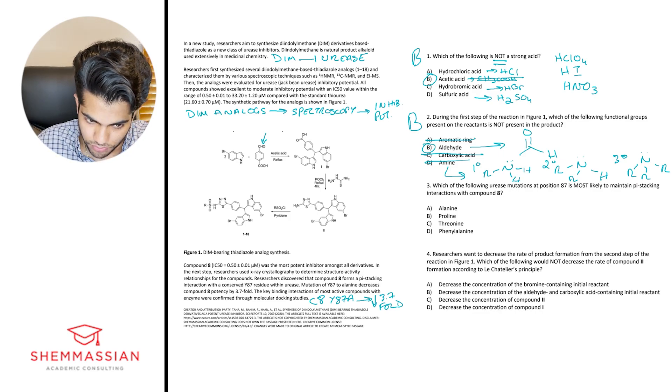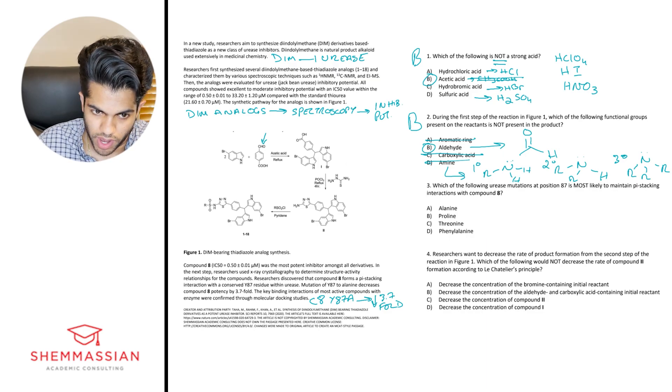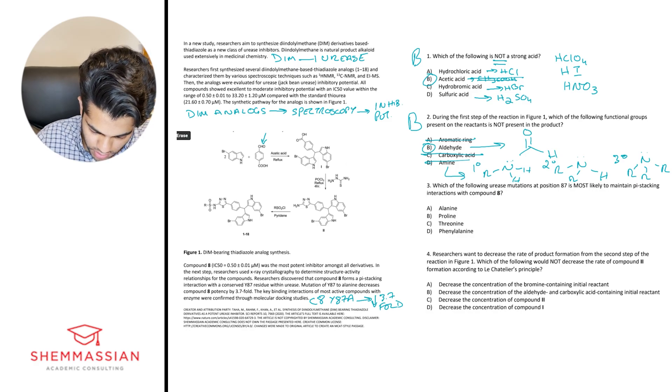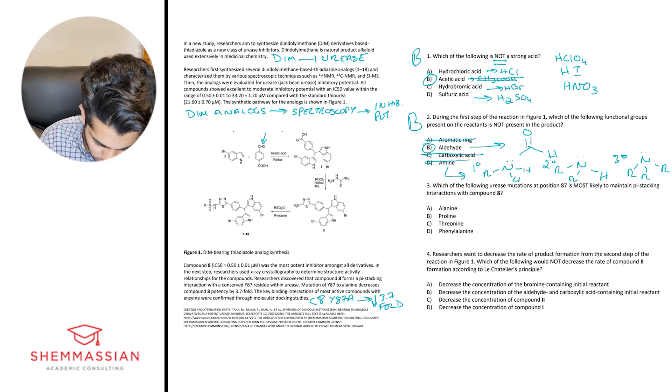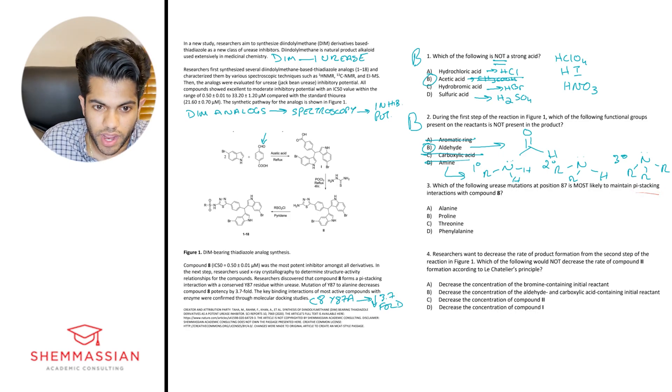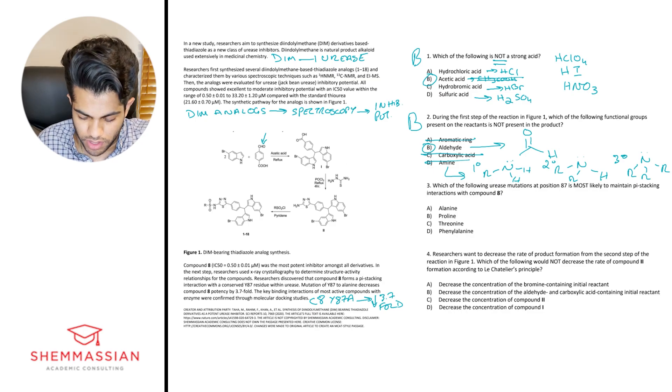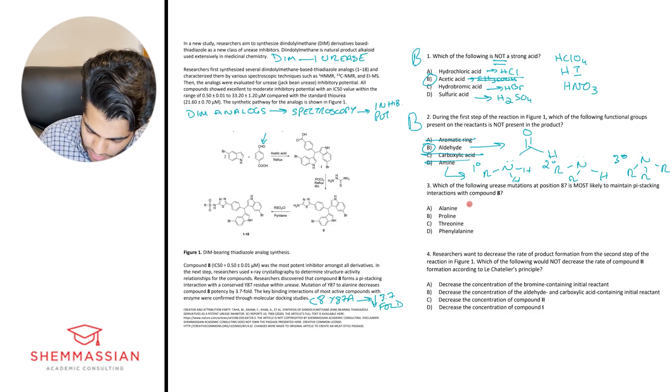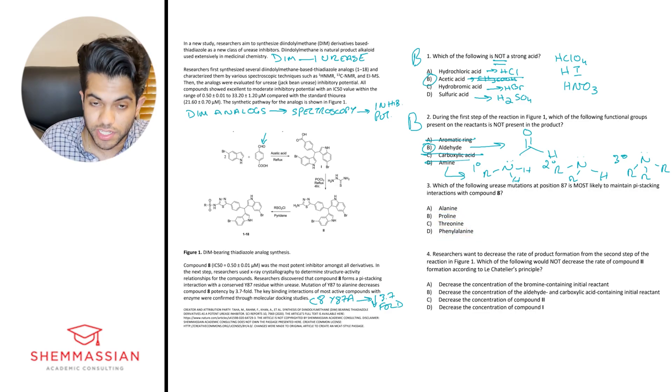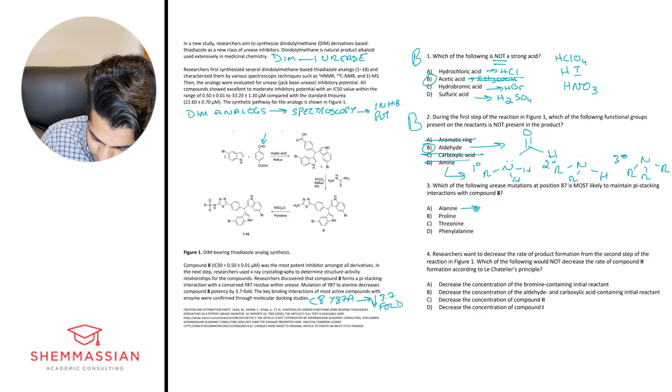Alright. So they ask, which of the following urease mutations at position 87 is most likely to maintain pi stacking interactions with compound eight. Alright. So they mentioned specifically pi stacking interactions. Pi stacking interactions are formed between aromatic rings. So the answer choice that we choose, whether it's alanine, proline, threonine, or phenylalanine needs to be one that has aromatic rings.